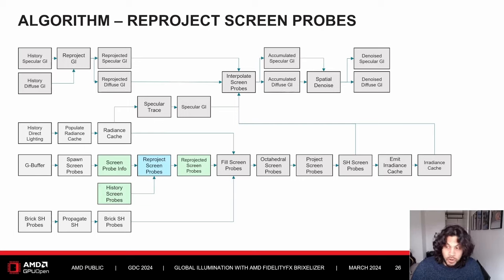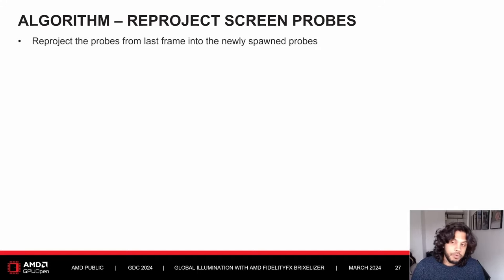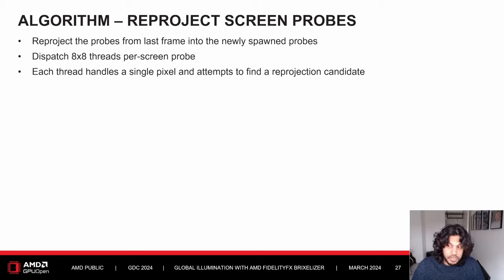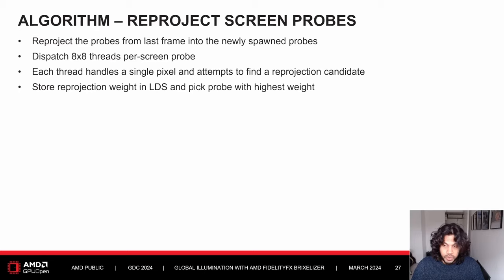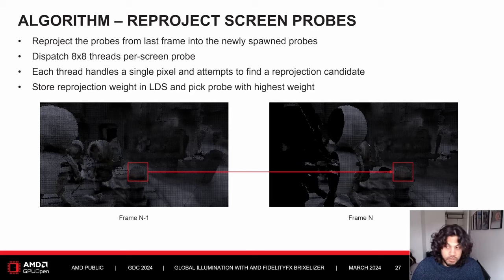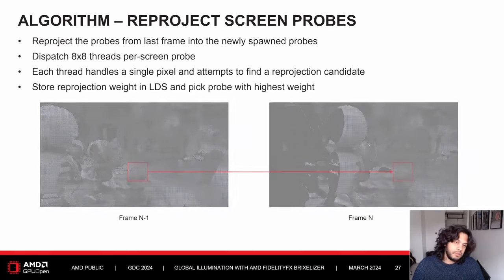After creating new screen probes, we attempt to reuse work from the last frame by reprojecting older probes. We reproject probes from the last frame to reuse their radiance in current frame probes. We dispatch 8×8 threads per probe, each handling a single pixel and attempting to find a reprojection candidate. We store the reprojection weight in shared memory and pick the probe with the highest weight as the one that gets reused. Here you can see the reprojected screen probes, with holes corresponding to probes that failed reprojection.